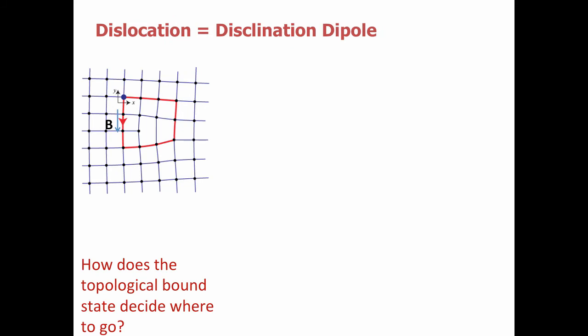Basically, a dislocation itself is a disclination dipole. What I've drawn here is a slide showing an edge dislocation, and I'm highlighting through these green lines the disclination dipole. I have a trivalent vertex next to a pentagon, and this is a plus 90 and minus 90 degree disclination bound to each other.